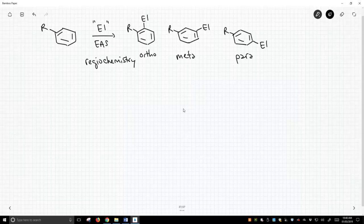So which is it going to be? Well, as it turns out, there are some trends. And a trend that people have identified, if R is an electron-donating group, and we'll need to kind of define what an electron-donating group is later,